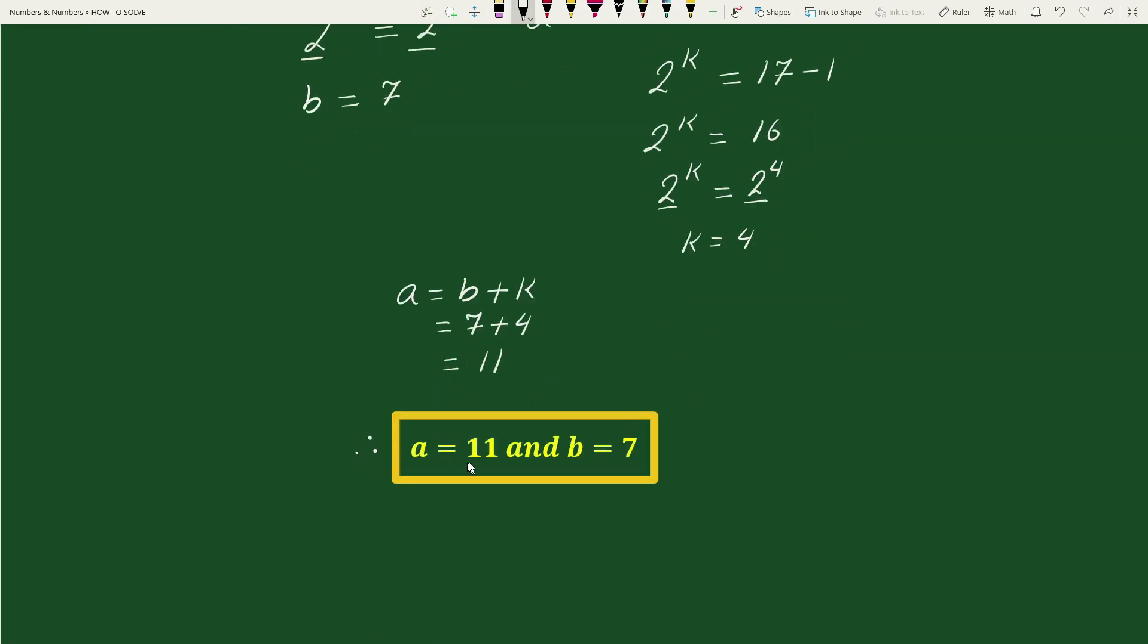A equals to 11 and b equals to 7. This is our solution.